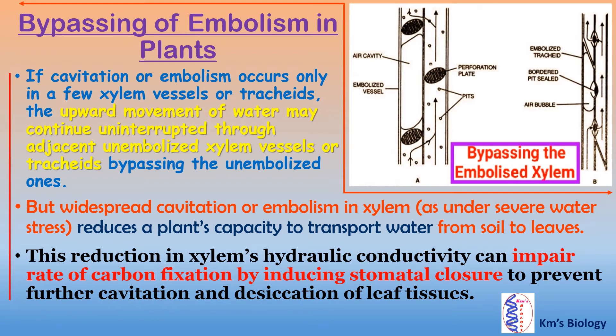Let us discuss about the bypassing of embolism in plants. If cavitation or embolism occurs only in a few xylem vessels or tracheids, the upward movement of water may continue uninterrupted through adjacent unembolized xylem vessels or tracheids, bypassing the embolized ones. But widespread cavitation or embolism in xylem, as under severe water stress conditions, reduces a plant's capacity to transport water from soil to leaves.